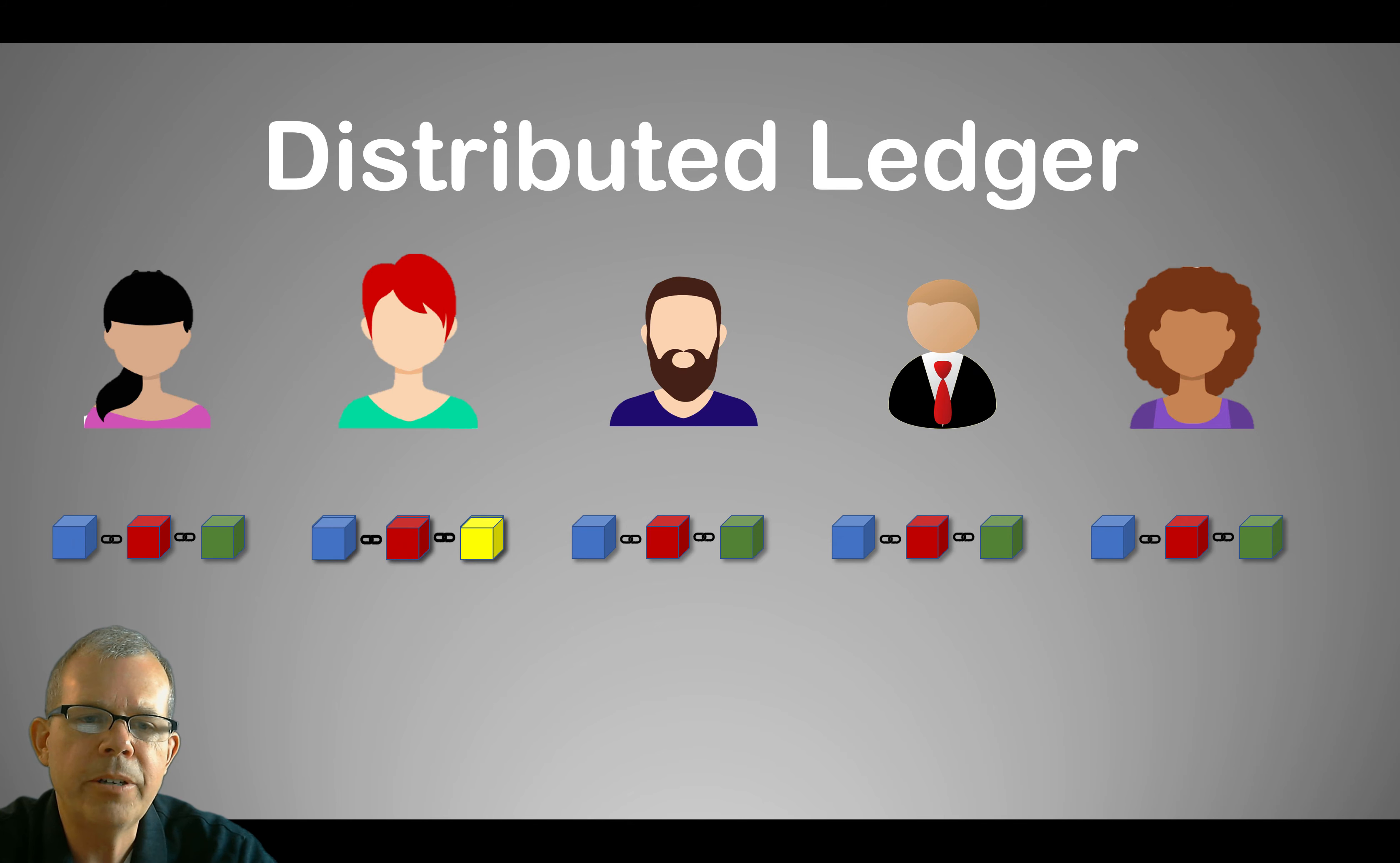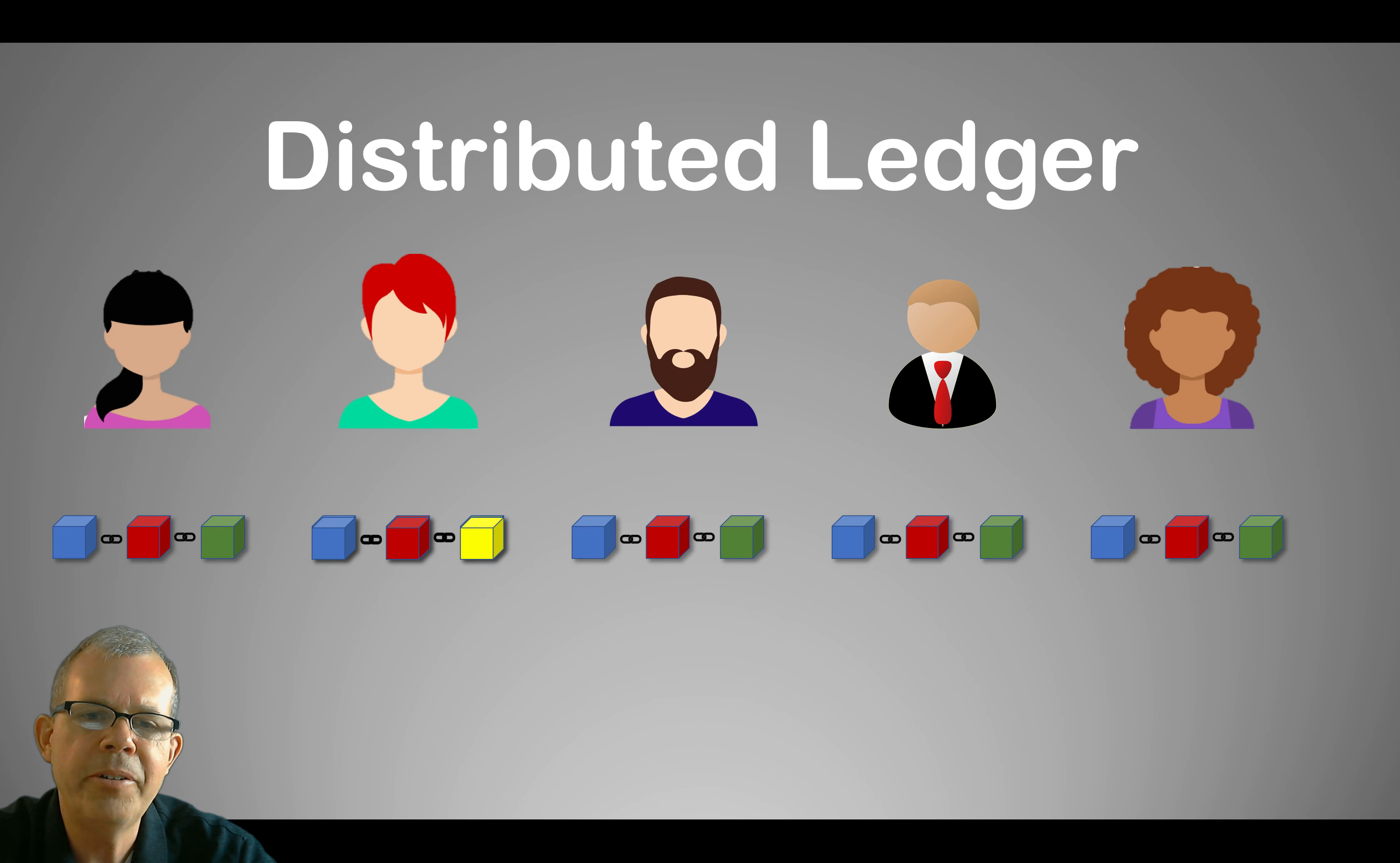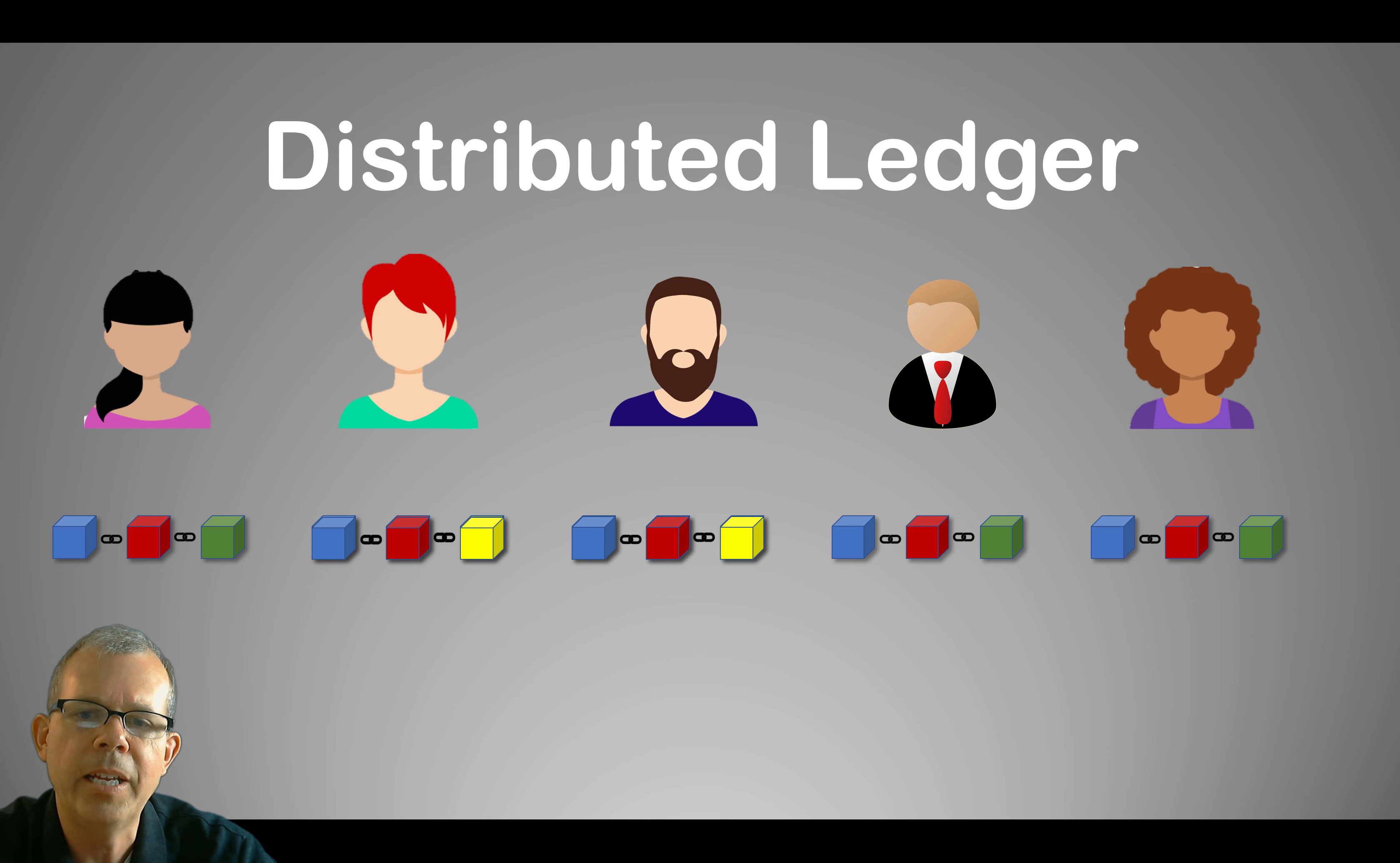So let's say our second person here says, I'm going to just modify my block a little bit. I'm going to change that $5 to $500. And then somehow she's able to perpetrate her fraud and she gets another person to agree that her blockchain is the correct version. So now it's just a simple matter of looking at the group and saying, we have a discrepancy. We're going to say, we've got two people here that say yellow is the new answer and everyone else says green.